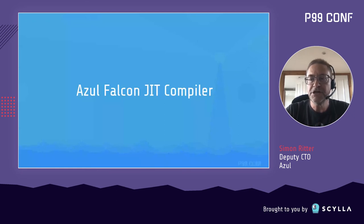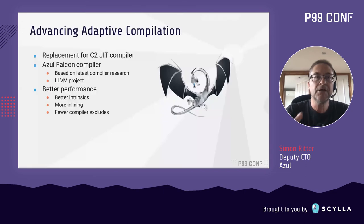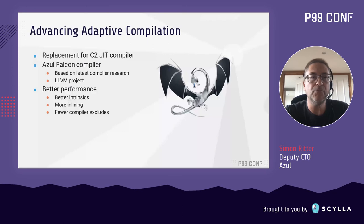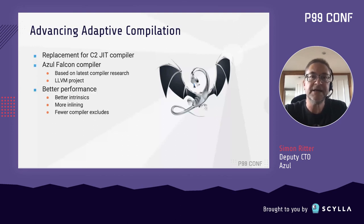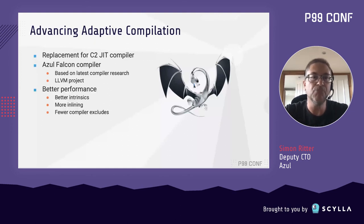A little bit about the Falcon JIT compiler. As I said, this is a replacement for the C2 JIT compiler. What we do there is look around and find there's a really good compiler project called LLVM — it's been around for 20 years, lots of people are contributing to it, and it's a really good back-end for a compiler to generate heavily optimised code. We've integrated that into our JVM, contributed back the changes that we needed for that, and it allows us to do things like better intrinsics, more inlining, and fewer compiler excludes.